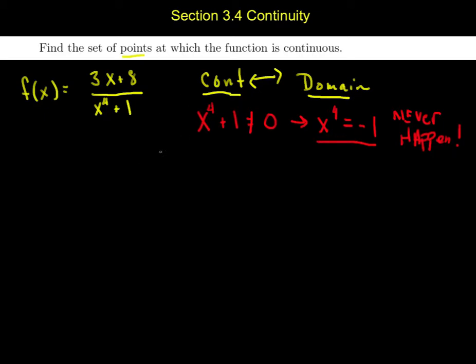So I'd say f is continuous everywhere. Maybe I'll use interval notation so it's continuous on the interval negative infinity to positive infinity. It's continuous everywhere. That's a continuous question. When is this continuous? It's continuous everywhere.